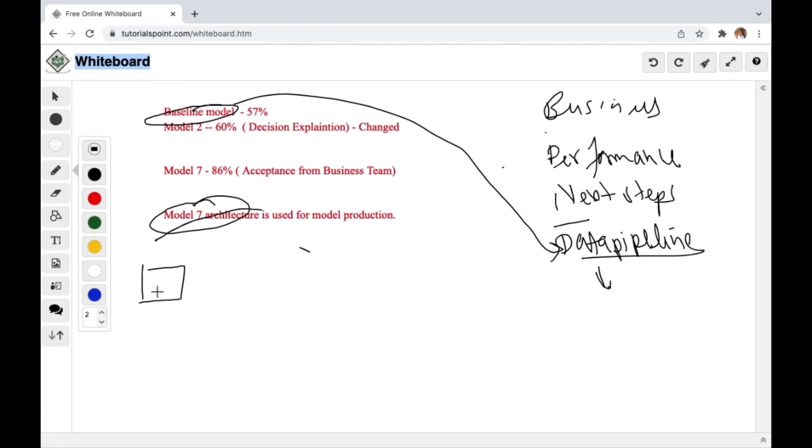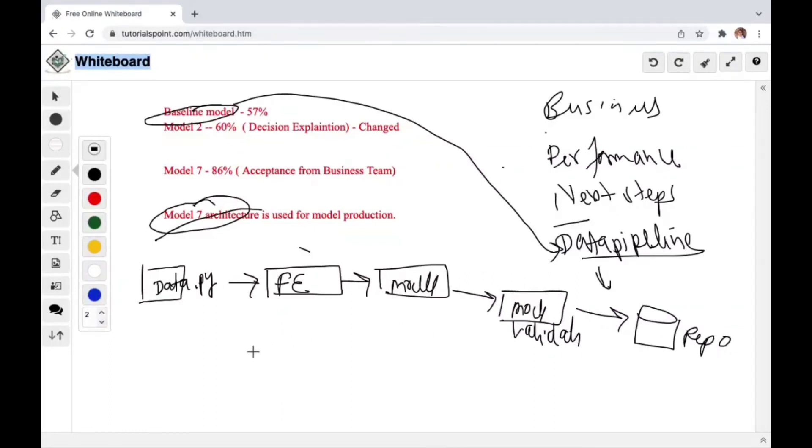Let's say here first, I have my data pipelines. This is my data, and let's call it data pipeline where I collect my data. Then next is my feature engineering. Then next is my model creation. And then next is my model validation. Once that is done, everything is okay, you put your model into your model repository.